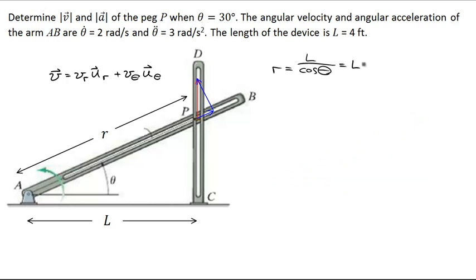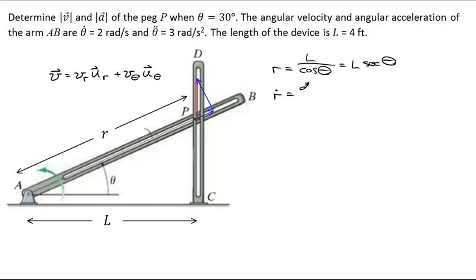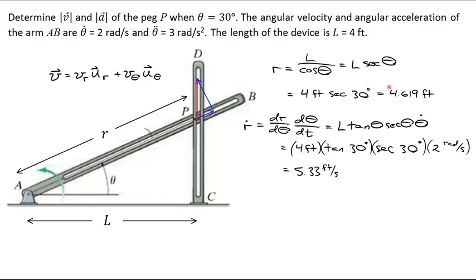We can rewrite this expression as r equals l times secant of theta, since 1 over cosine theta is the secant. Then r-dot equals dr/dt, which by the chain rule is l times tangent theta times secant theta times theta-dot. Plugging in numbers gives r approximately 4.6 feet and r-dot approximately 5.33 feet per second, evaluated at theta equals 30 degrees and angular velocity of 2 radians per second.